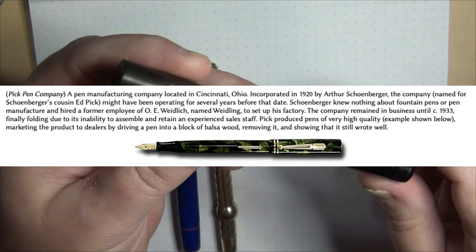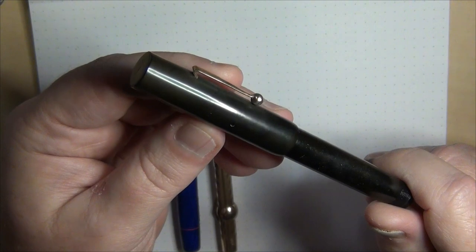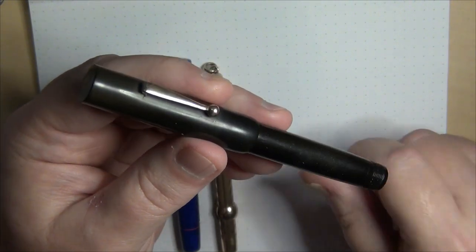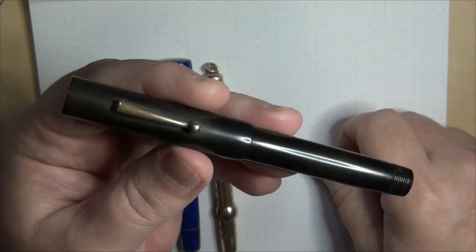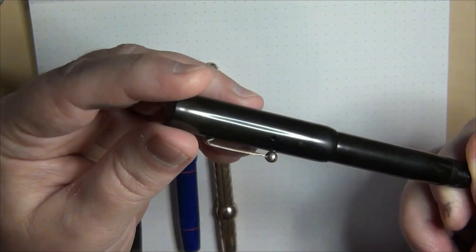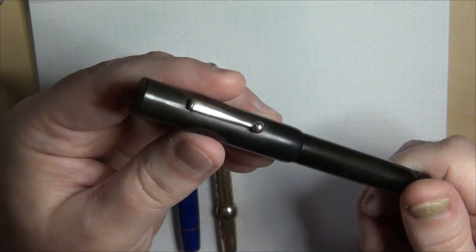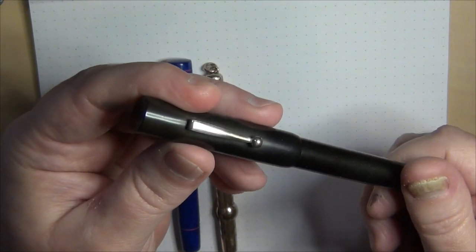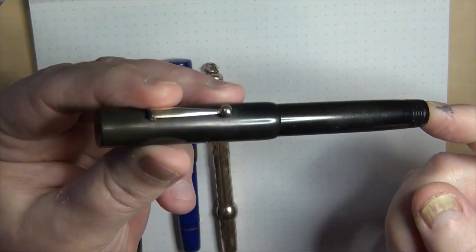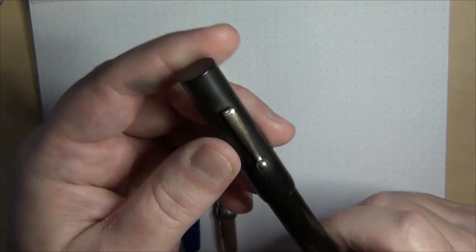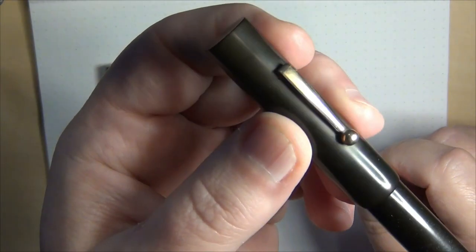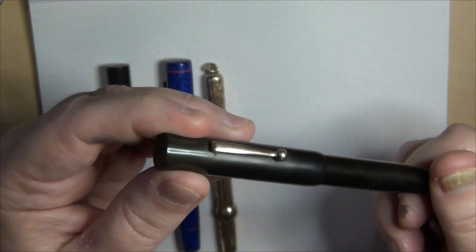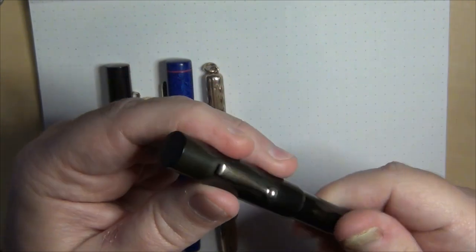So I take back what I said about the 30s and into the 40s. But the Pick Manufacturing Company was a fountain pen company that made some decent pens out of Cincinnati, Ohio. I should have looked at my notes, but 1920 to 1933, so we know that this was probably manufactured by Pick in the 20s to early 30s. So a holy water sprinkler.